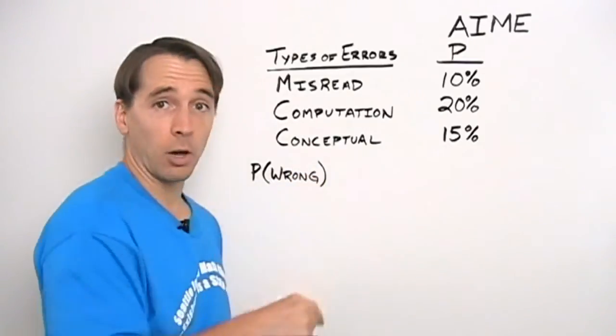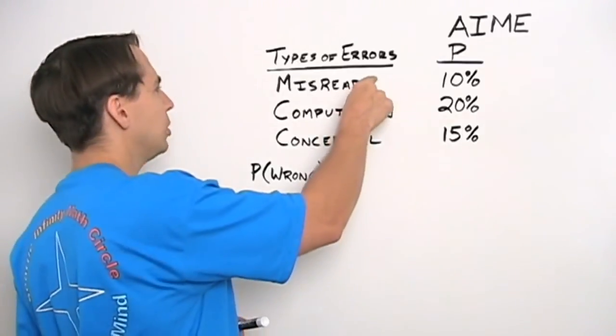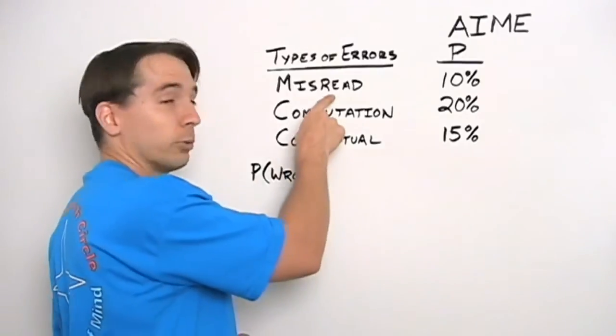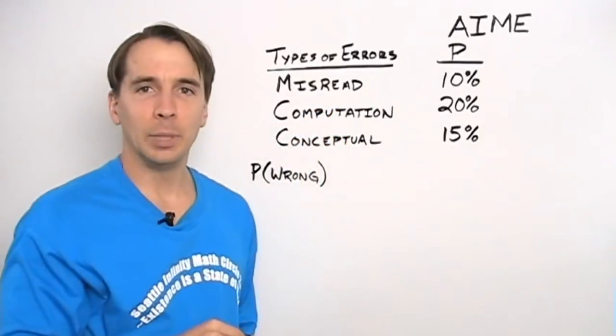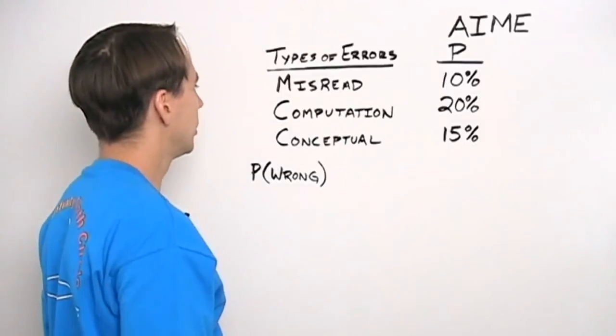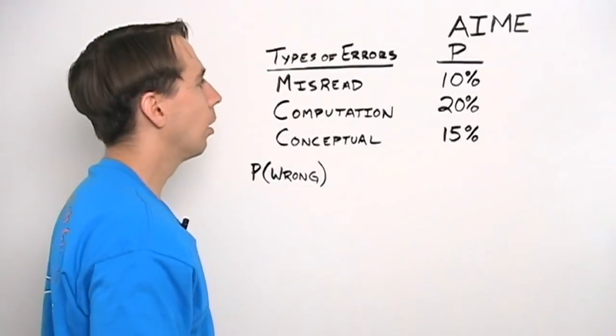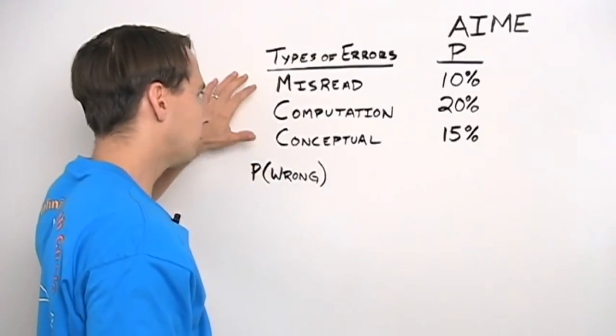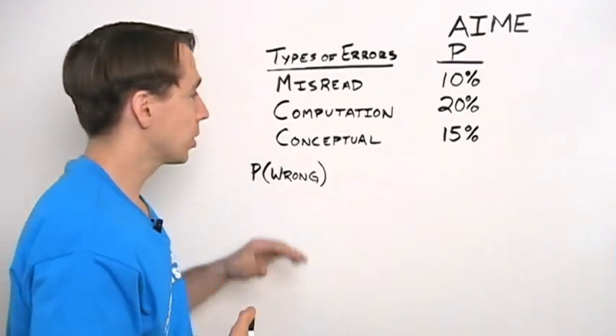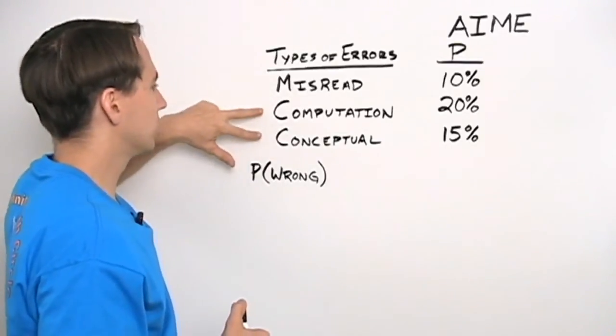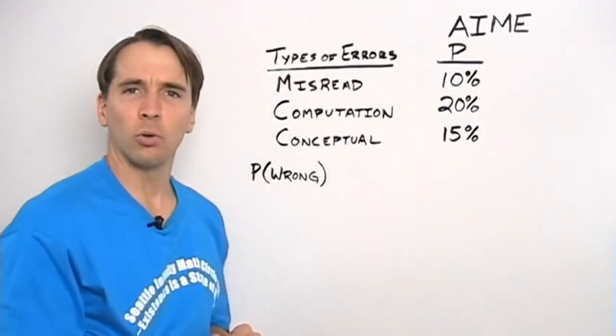What's the probability that I'm wrong? Now I might make all three mistakes, then I'm definitely going to be wrong. Or I might only misread the problem. Or I might read it right, but both think about it wrong, and make a computation mistake. So there are a lot of different combinations of ways I could be wrong. And well, we could find the probability of each of those combinations, and just do a whole bunch of casework. All three wrong, just one of them wrong, or some combination of two of them wrong. And that doesn't look like a whole lot of fun.